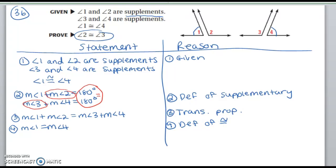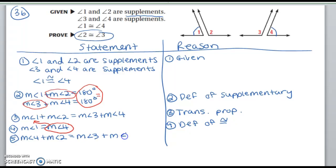Now that I know that, I can take the measure of angle 4 and substitute it in for the measure of angle 1. The whole point of that is that I'm going to get measure of angle 4 on both sides of the equal sign, and then I can get rid of them by subtracting. So step 5 is a substitution step: measure of angle 4 plus measure of angle 2 is equal to measure of angle 3 plus measure of angle 4 — substitution property.